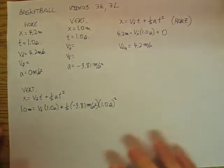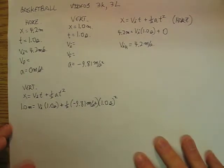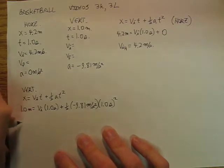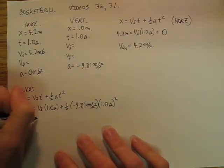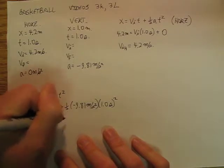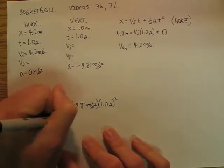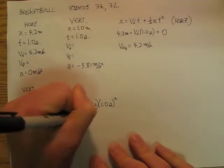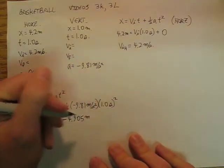Okay. Well, that's actually not all that bad. So now that's going to be 1 meter equals v_i 1 second, and that's going to be minus 4.905 meters.